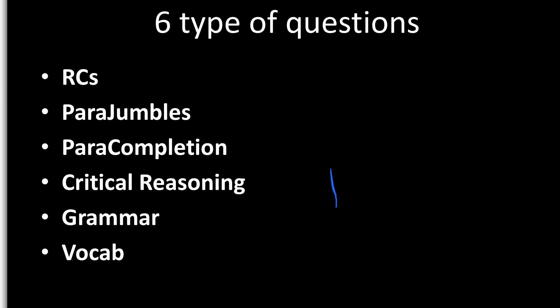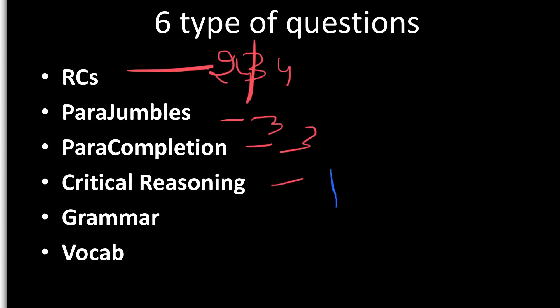To summarize, the six question types in the verbal section are: RC, Para Jumble, Para Completion, Critical Reasoning, Grammar, and Vocab — with RC being the main one at 24 questions out of 34. Para Completion: 3, Para Jumble: 3, Critical Reasoning: 4, Grammar and Vocab: 0.